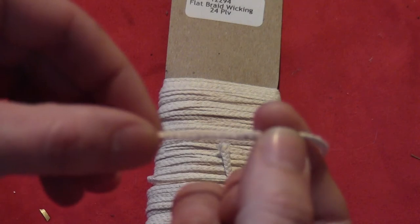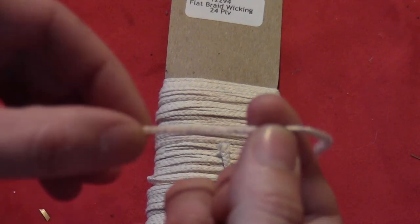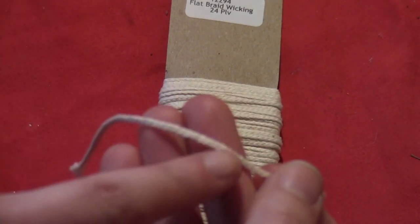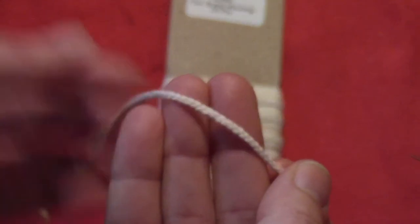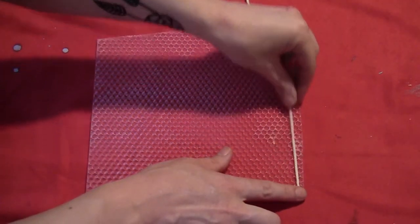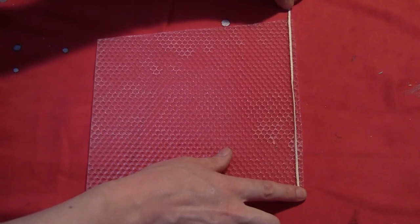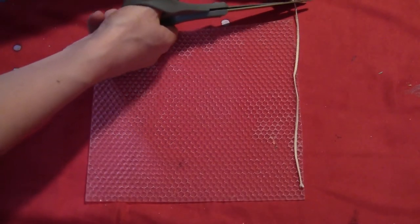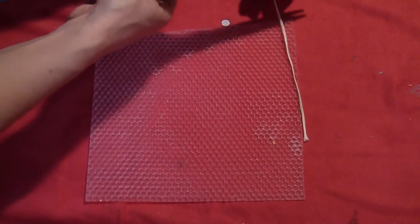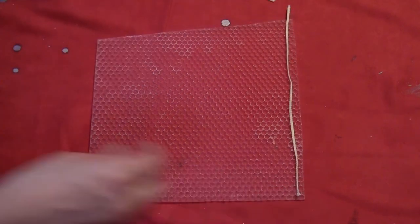So then you'll need some wicking. For rolled candles you use flat braid wicking, which is exactly what it sounds like. It's flat and it's braided. Run that along your candle on the wide side and cut it off about a half inch above where the side ends, just like that.